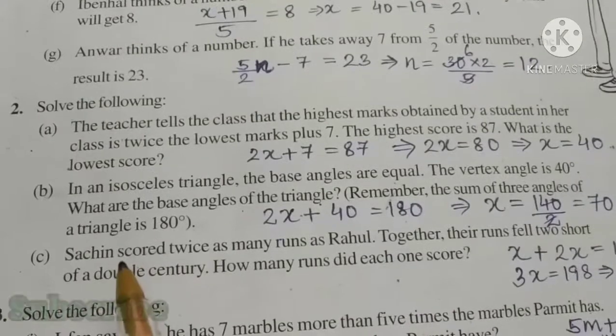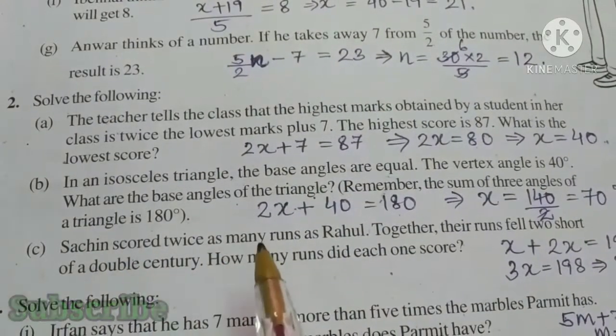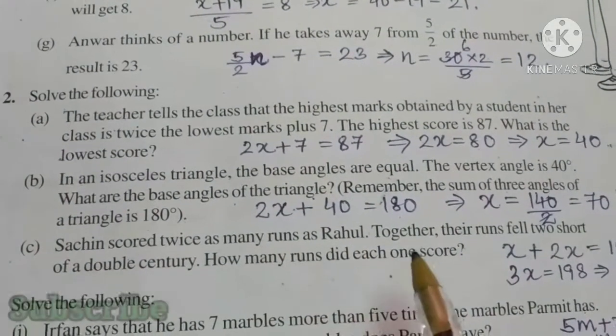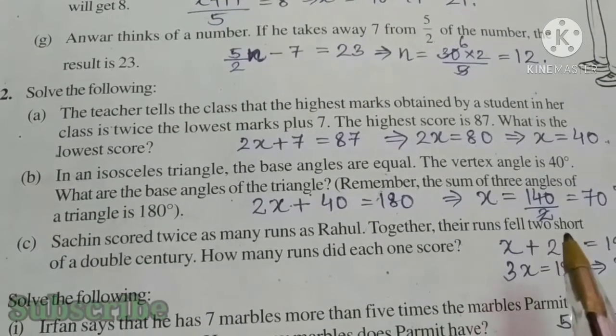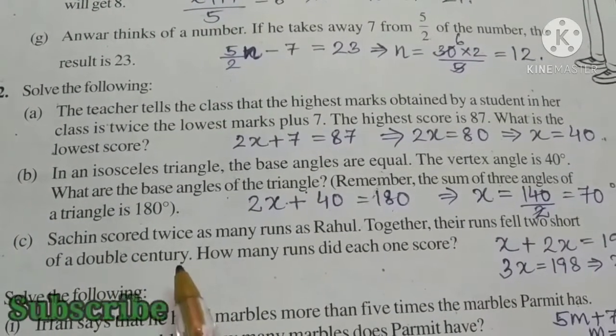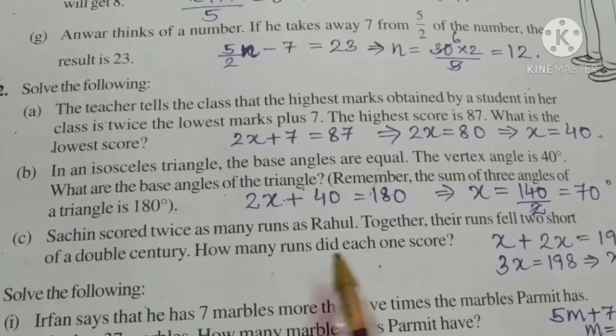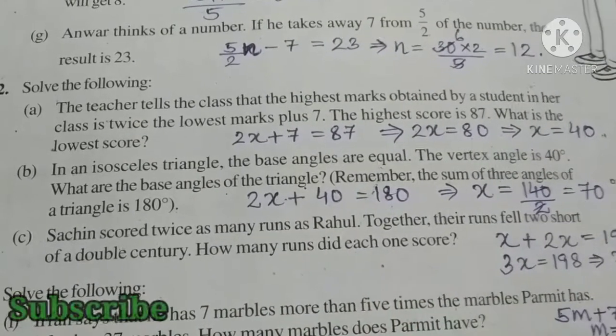One more is there. See, Sachin scored twice as many runs as Rahul. Together, their runs fell too short of a double century. How many runs did each one score?